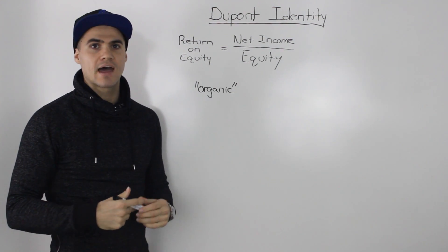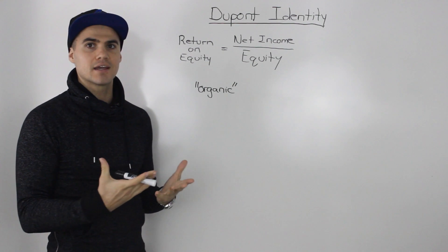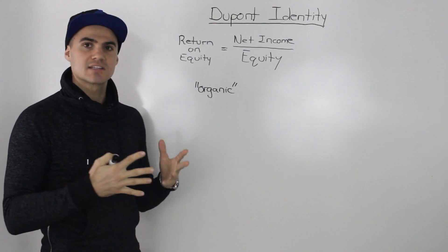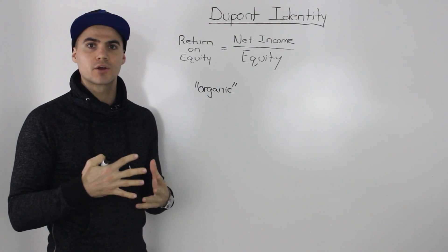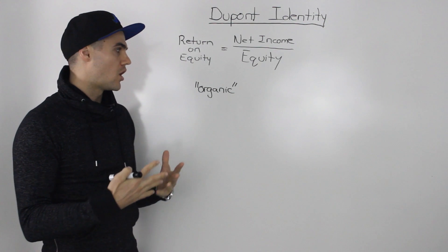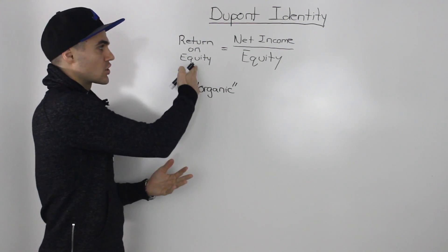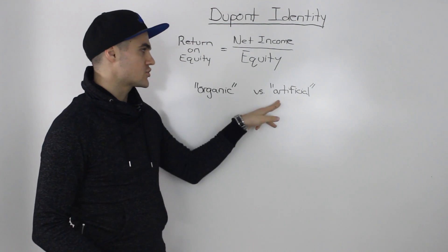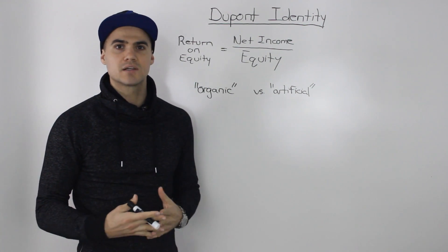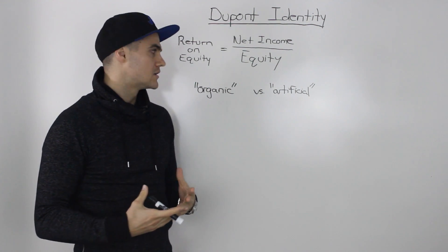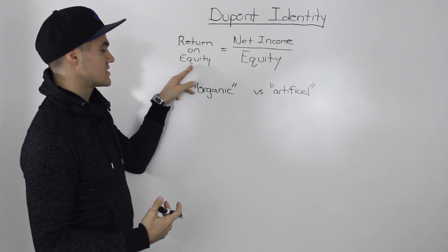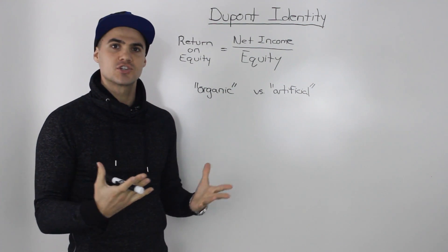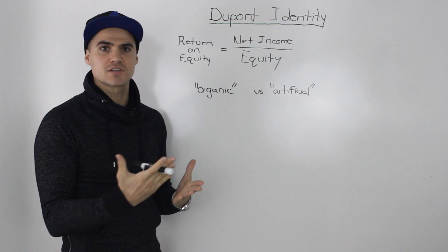The problem with this ratio is that there are positive and negative ways to increase it. The positive, or more organic ways, is increasing things like profit margin or increasing the efficiency of the assets. All of those things will bring up the return on equity in an organic, nice way. But unfortunately, there are also artificial ways to bring up the return on equity. The most common example would be taking on more debt.